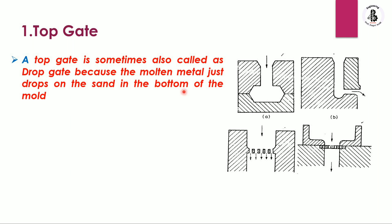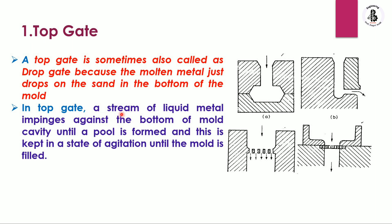In the top gate, a stream of liquid metal impinges against the bottom of the mold cavity until a pool is formed, and this pool is kept in a state of agitation until the mold is filled. That is the top gate system.